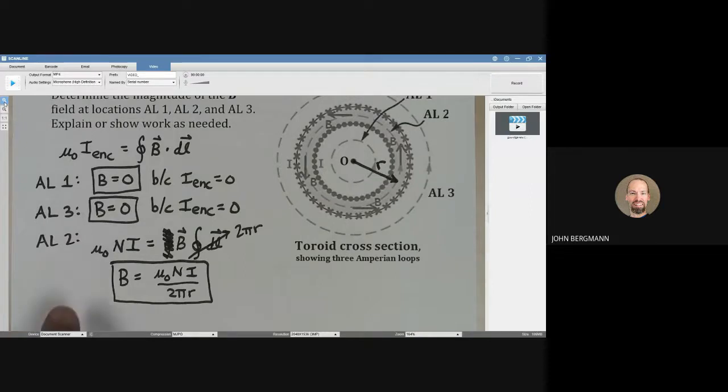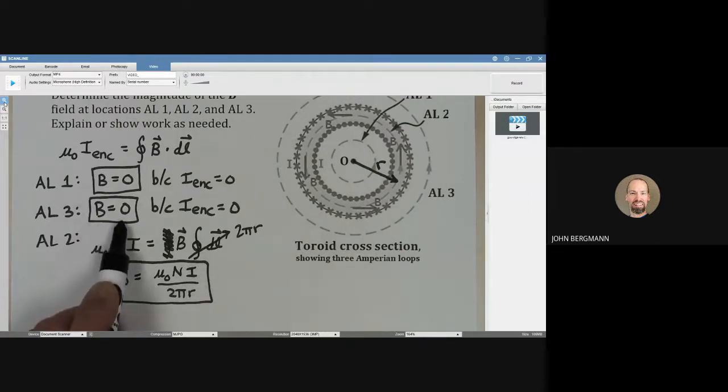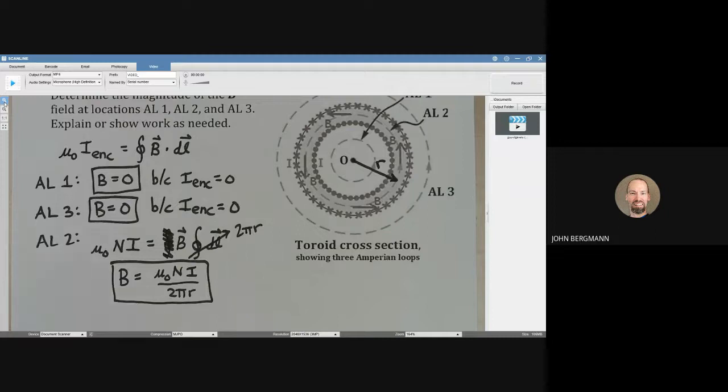However with a toroid on the outside of the toroid the magnetic field is zero and that was not the case for a solenoid. For a solenoid there was a non-zero magnetic field on the outside but for a solenoid the magnetic field was constant within. For a toroid it's not quite.